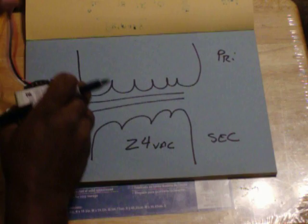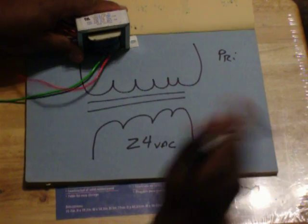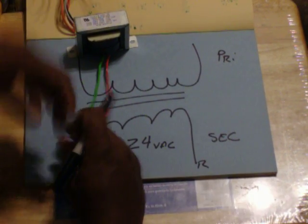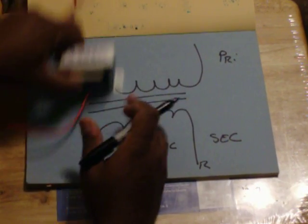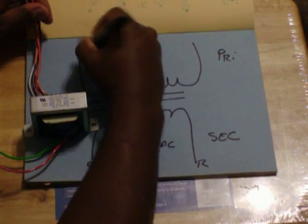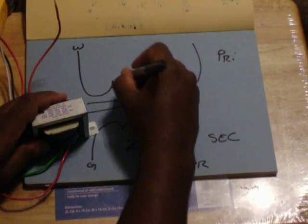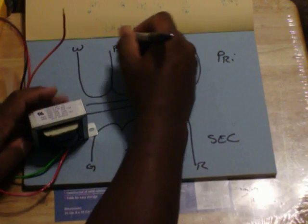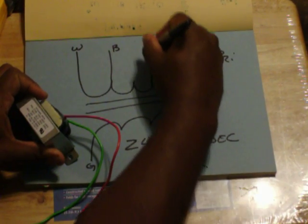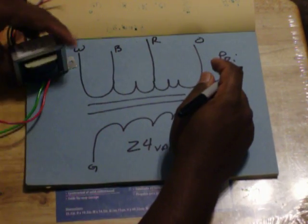What we're going to talk about here is what we call a multi-tap transformer. First of all, my secondary wires here are green and red. I know that because it says it on top of the transformer. Now, the reason I have so many wires here, one of them is a white wire. It's going to hook up no matter what. Then we have a black wire. You then have a red wire and an orange wire.